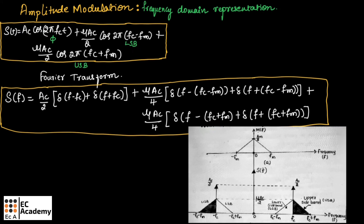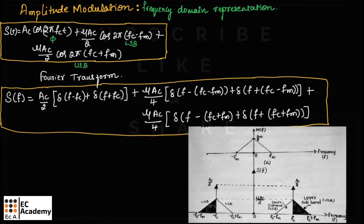So this is the spectral representation for amplitude modulated signal in frequency domain. This is about frequency domain representation of amplitude modulated signal. Hope you have understood the topic. Thank you.